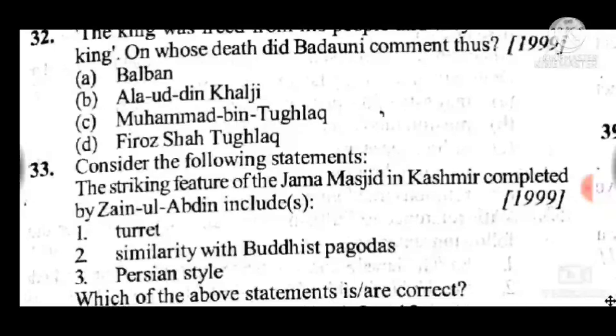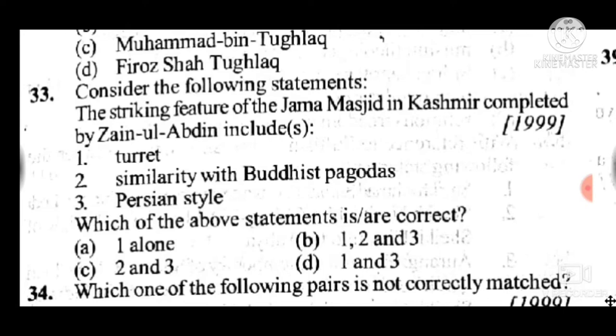Question 33: The striking features of Jami Masjid in Kashmir completed by Zain-ul-Abidin include — answer is B, one, two, and three; all statements are correct: similarity with Buddhist pagodas and Persian style elements.